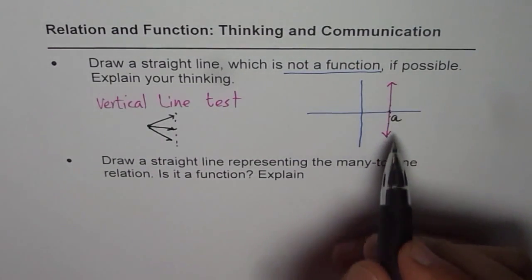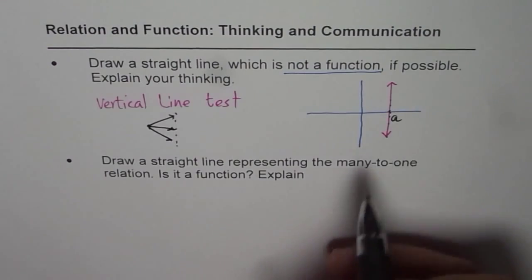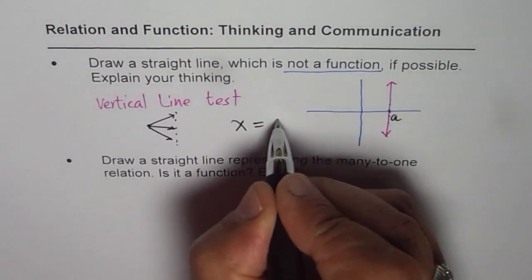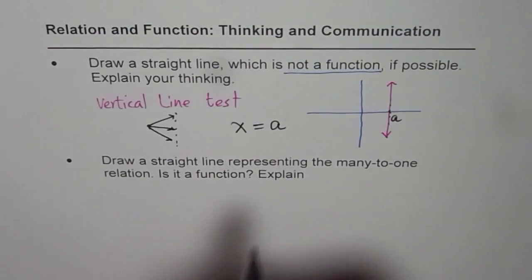So this relation is not a function. Our equation, which is x equals to a, is a vertical line, and this vertical line is not a function. So that is the answer to the first question.